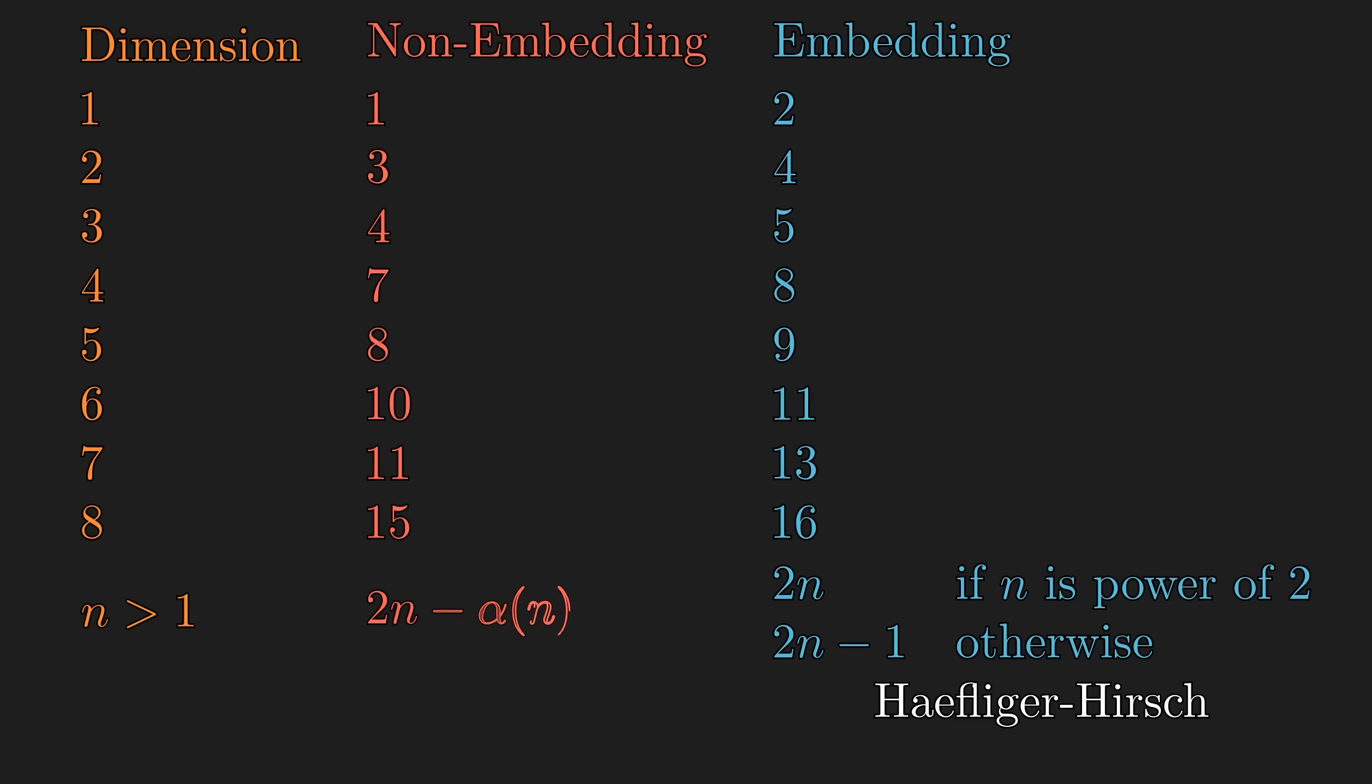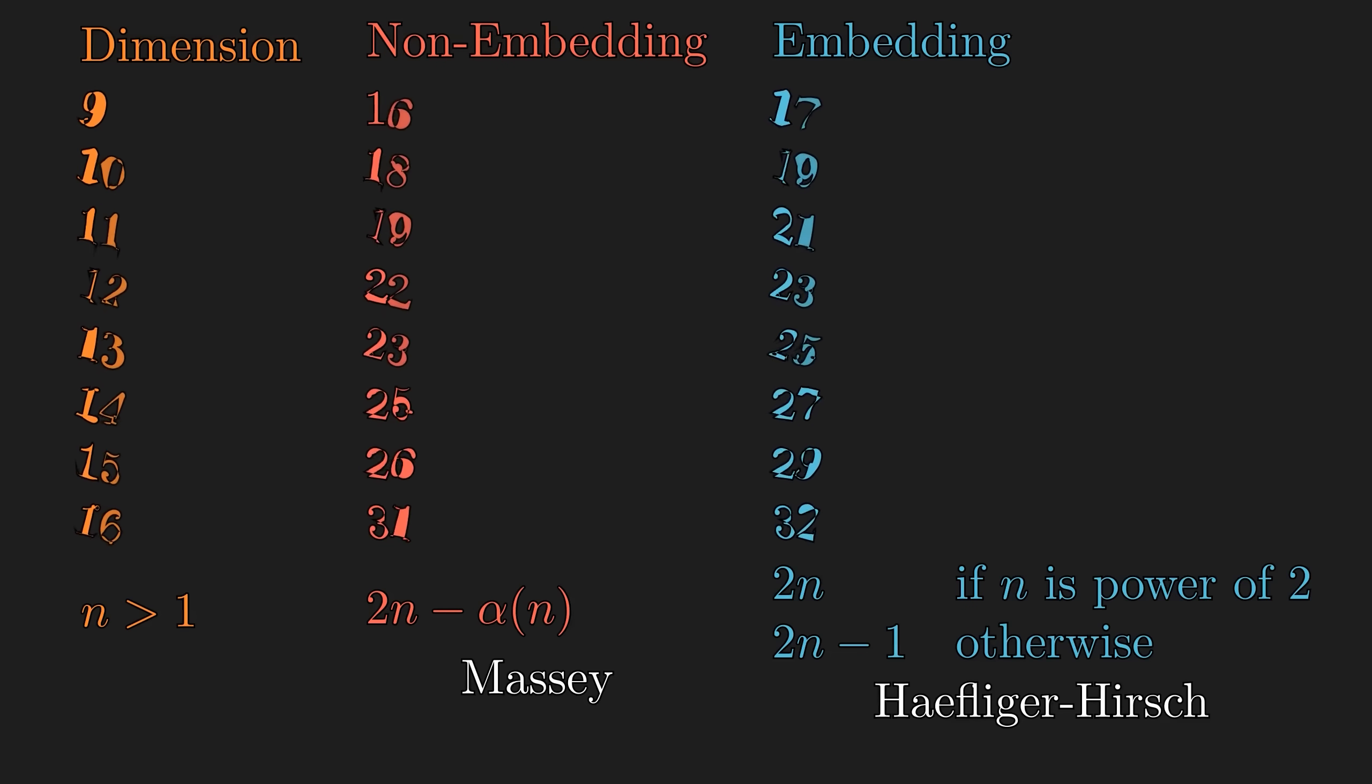Perhaps, what's more interesting are the non-embedding dimensions. Massey constructed manifolds for each dimension that cannot be embedded in these specific higher dimensions. If you're up for some challenge, pause to guess what this alpha function is from these numbers. Or maybe another 8 to see the pattern better.